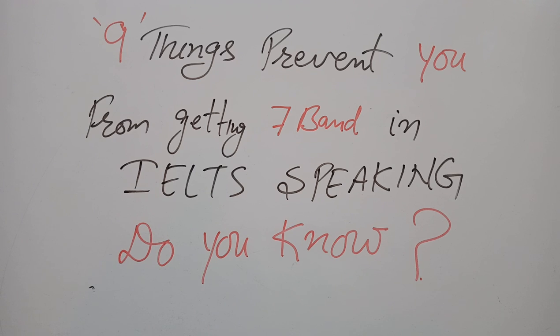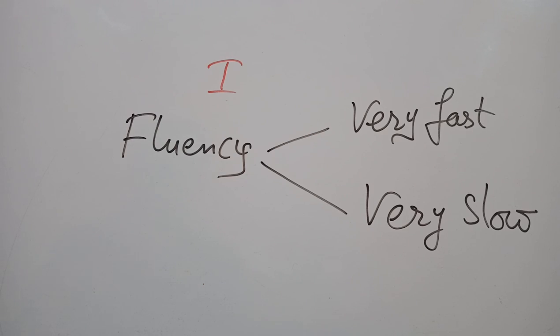First and foremost, the most serious mistake is regarding fluency. Most students think that fluency means speaking at great speed, speaking fastly, thinking this will have great impression on the examiner. It's not like that. On the other hand, some students speak very slowly with very long pauses. Both mistakes cut your score. You have to speak at your natural pace.